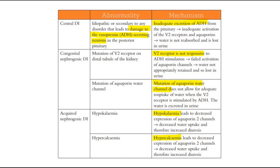For the nephrogenic type, it can be further classified into congenital or acquired. In the congenital type, there is mutation of the V2 receptor on the distal tubule of the kidney. The V2 receptor is not responsive to ADH stimulation, so there is failed activation of aquaporin channels and water is not appropriately retained, then lost in urine. Another abnormality is mutation of the aquaporin water channel, which does not allow adequate reuptake of water when the V2 receptor is stimulated by ADH; hence water is excreted in urine.